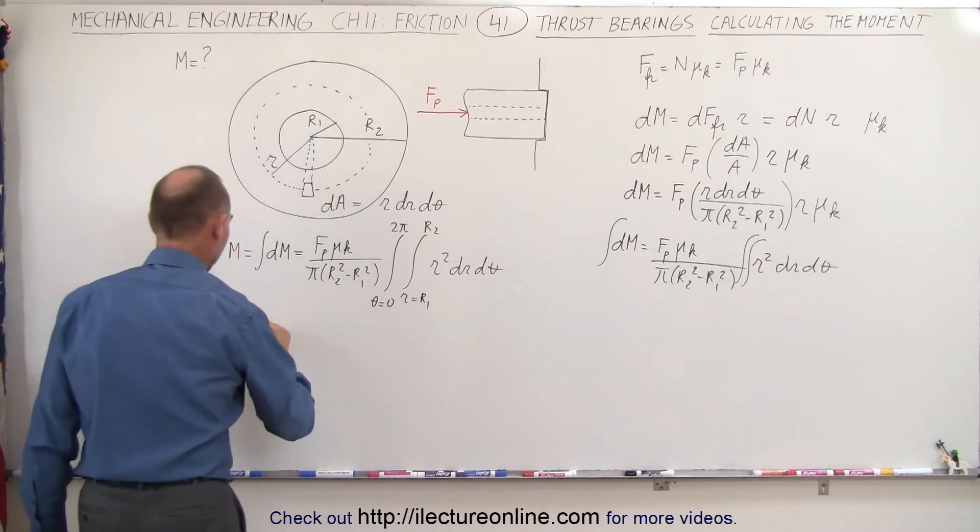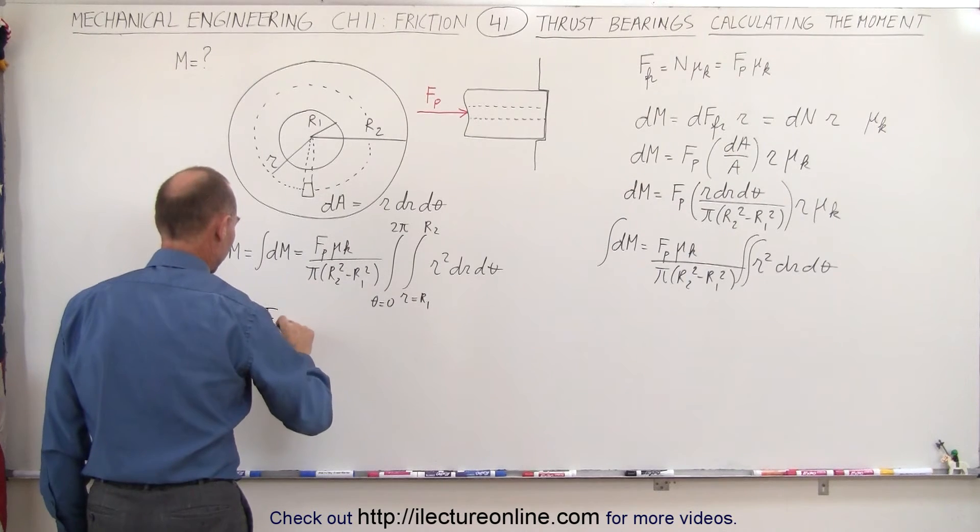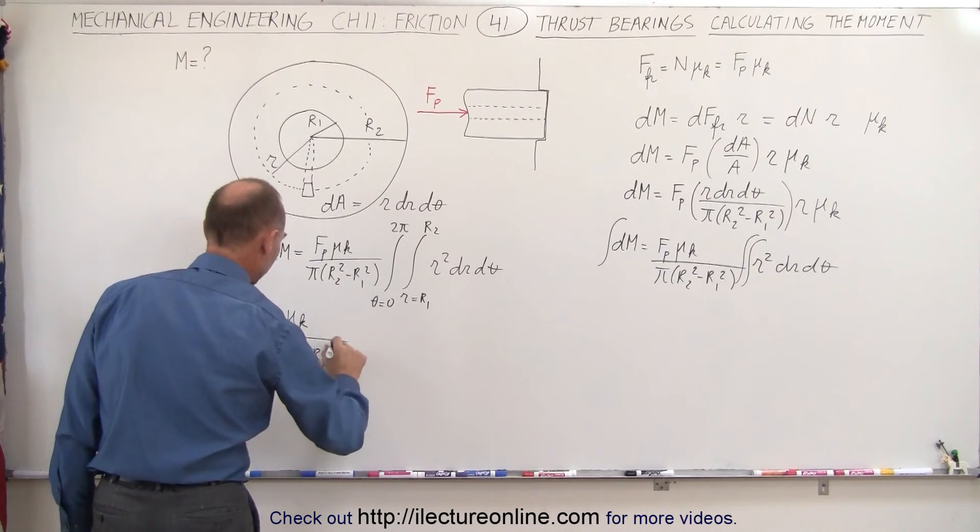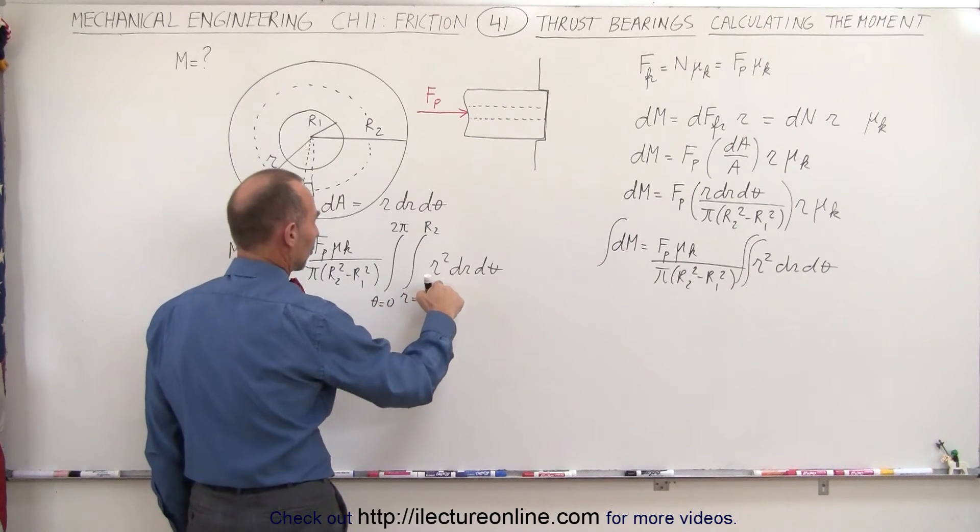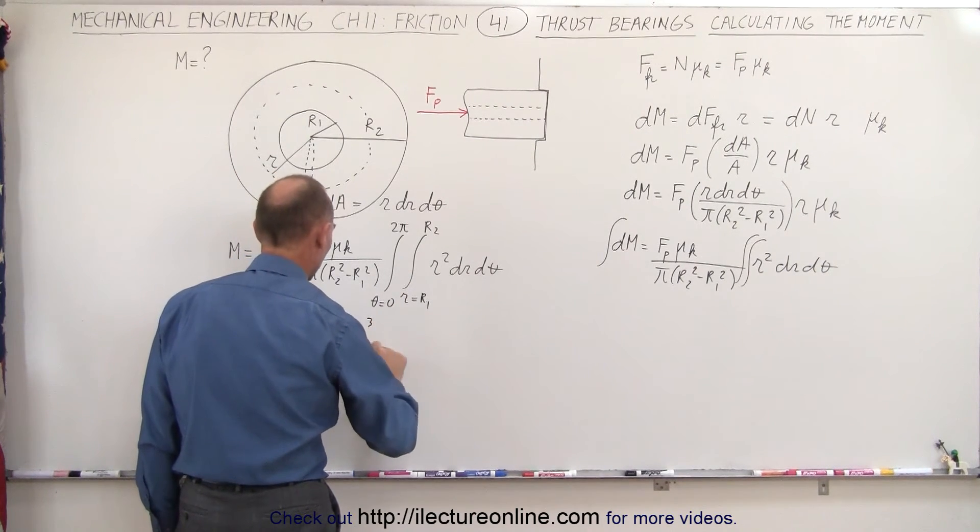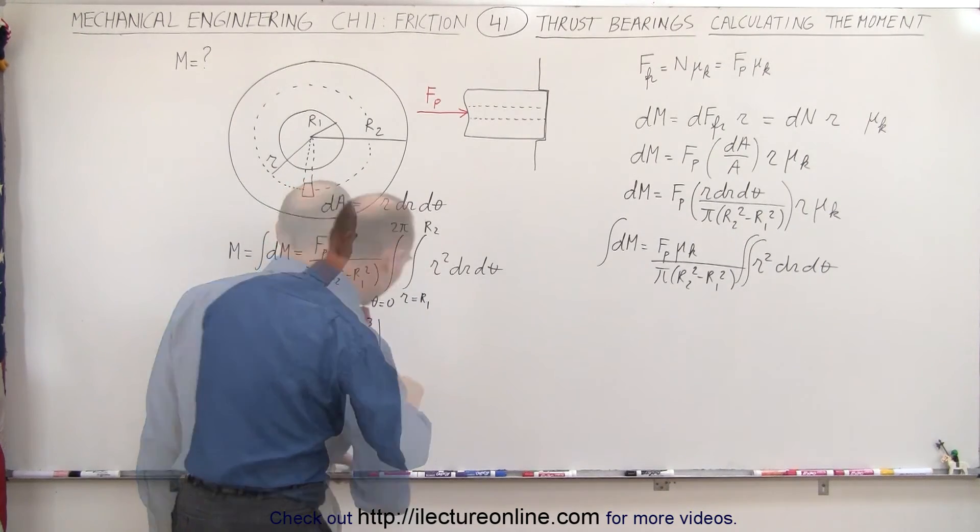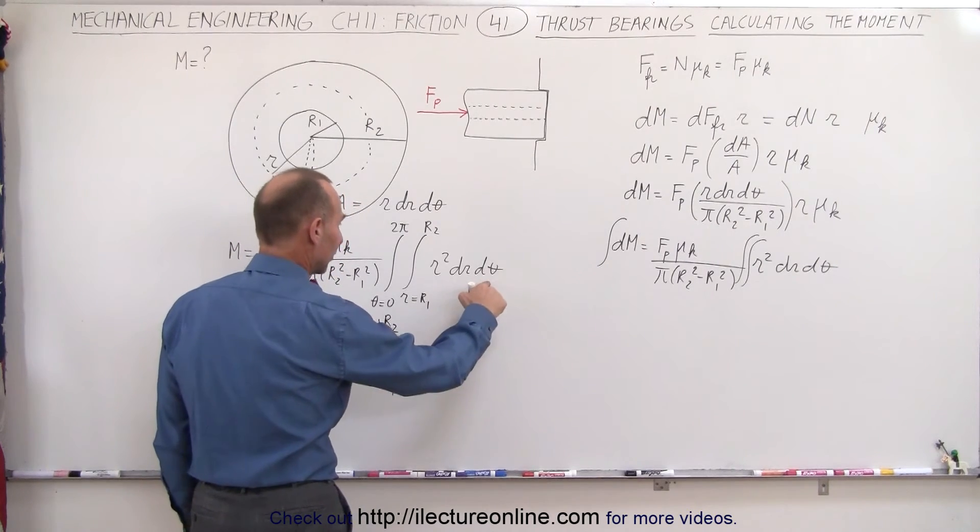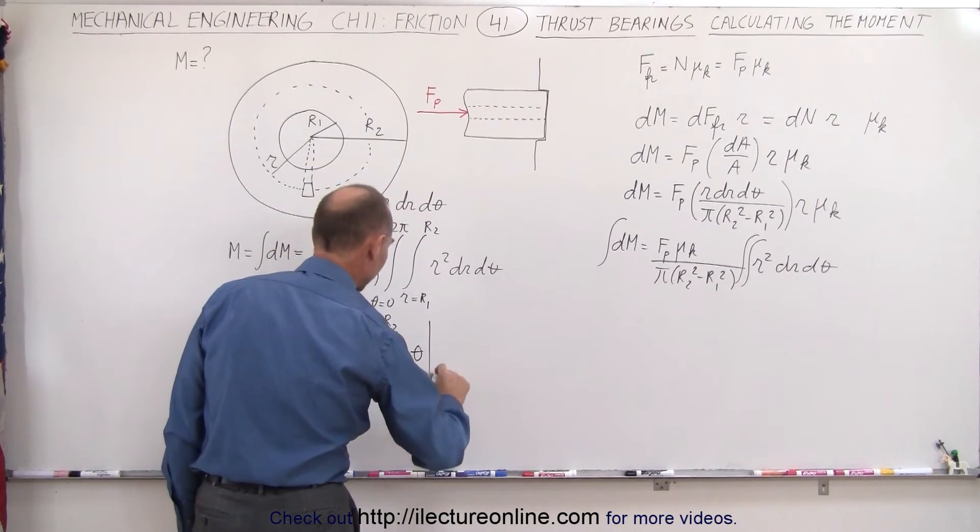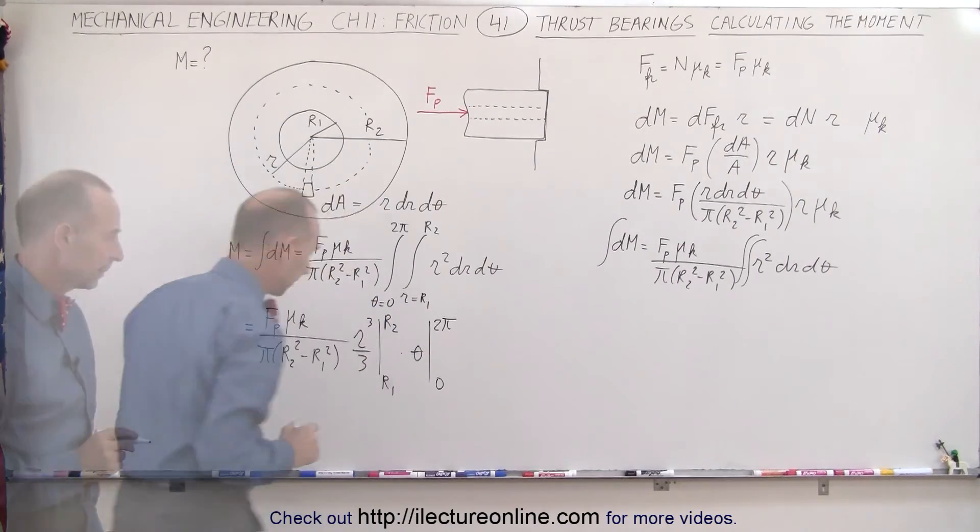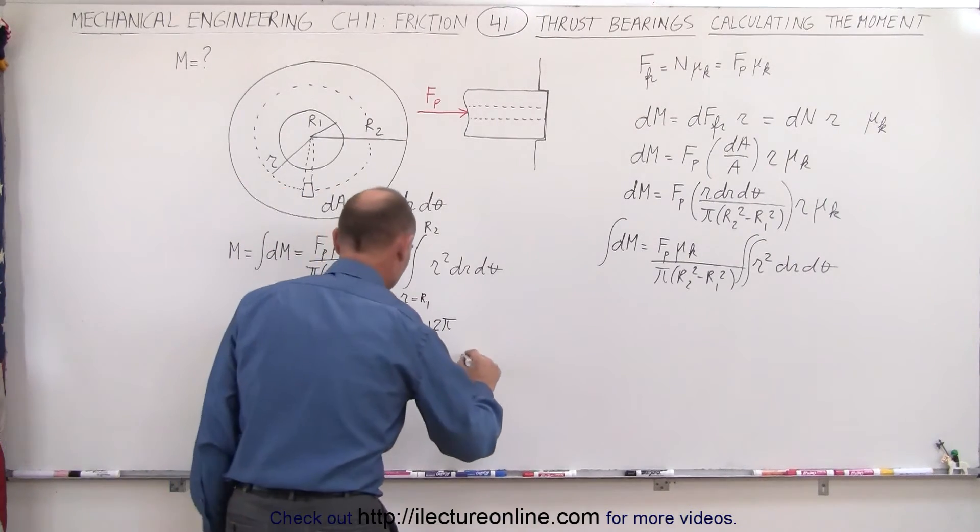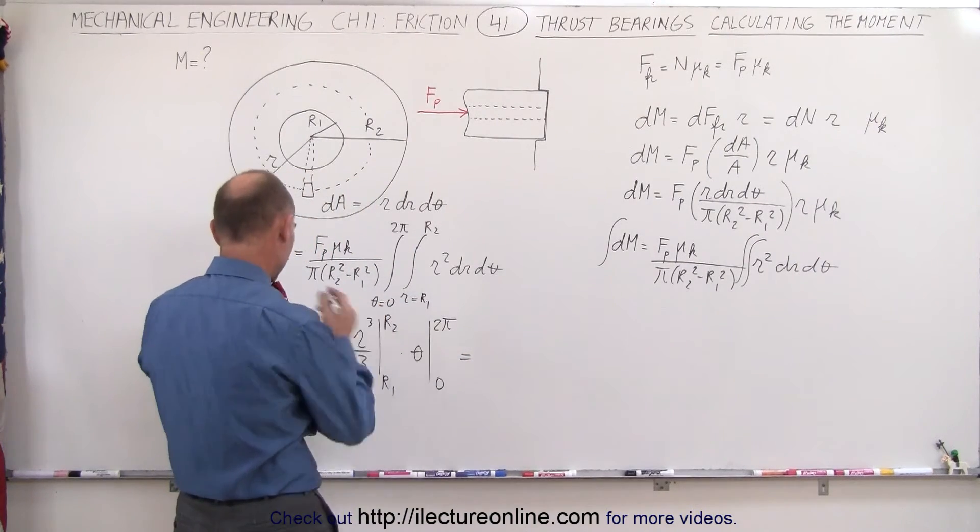Okay, when we integrate, we'll get the following. So this is equal to, we still have the constants, f sub p mu sub k divided by pi r2 squared minus r1 squared times, when I integrate r squared, I get r cubed over 3 evaluated from r1 to r2, and then multiply times the integral of d theta, so theta evaluated from 0 to 2 pi. So when we do that, I know it's a little bit sloppy, but it just saves a little board space. I did both integrals like that. So now when we collect all common terms, we get the following.